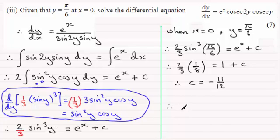And therefore I can just substitute that back into here, and we've got 2/3 of sin³y equals e^x - 11/12. We could leave it like that as the solution to our differential equation.